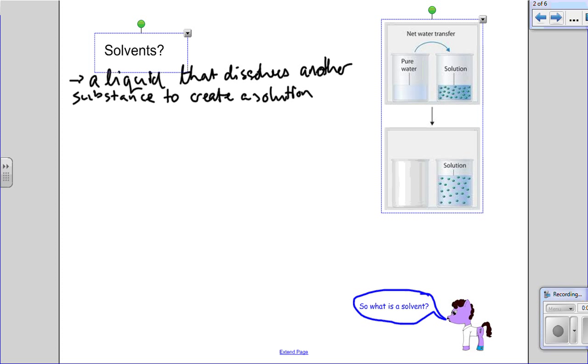So particles in the solution are distributed evenly, and we see that here. Obviously the solvent is water here, and the particles are distributed evenly. When we add more water to it, the particles are still distributed evenly, just spread further apart. So we'll say that the solute distributes evenly within the solvent.